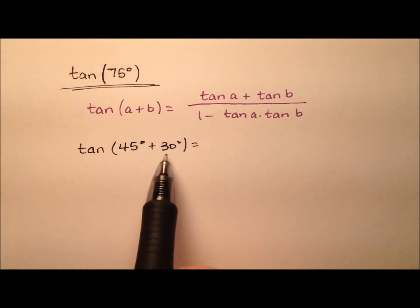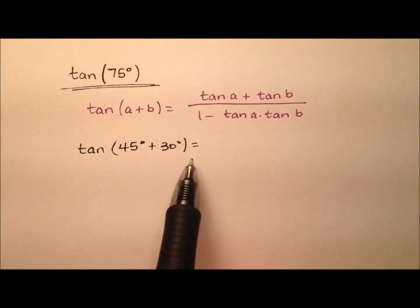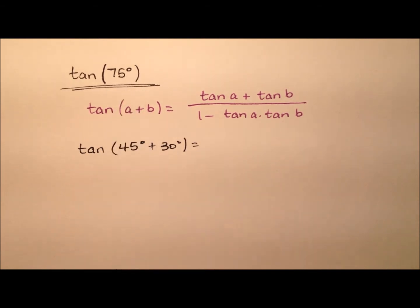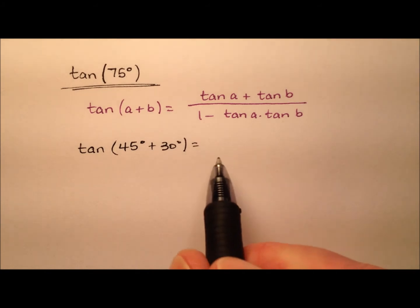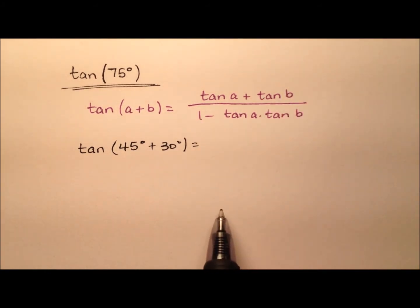We know the tangent of both 30 and 45, and 30 plus 45 does indeed add up to 75. So let's go ahead and see what this expression is going to look like.